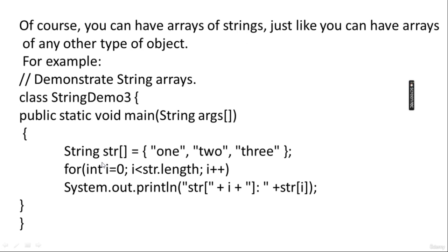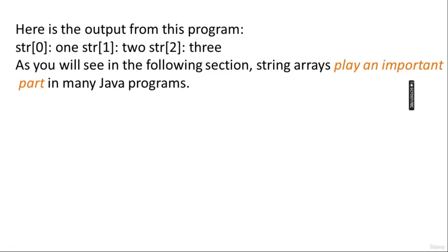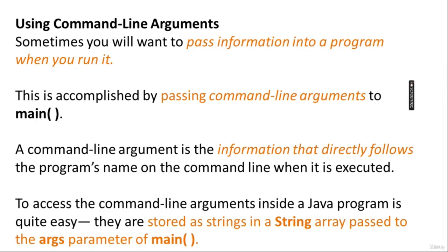You can have arrays of strings just like you can have arrays of any other type of object. In a string array example, the string array has three values — one, two, and three. A for loop iterates over the array length and prints each element: string at 0 is one, string at 1 is two, string at 2 is three. String arrays are an important part of any Java program.